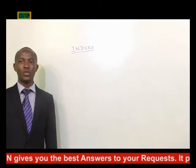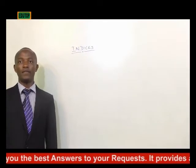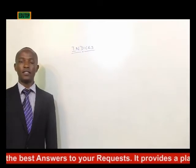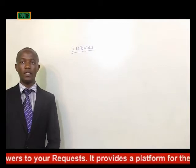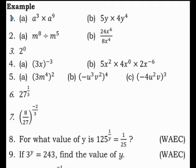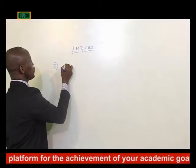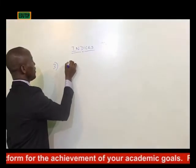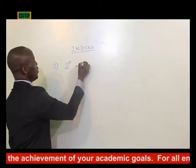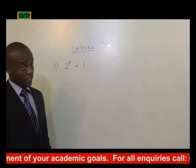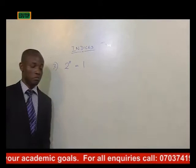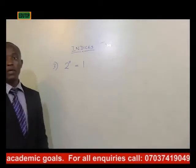The next question is based on the third law of indices: m raised to power 0 equals 1. So 2 raised to power 0 is simply equal to 1, and that's the final answer — there's no magic about it.